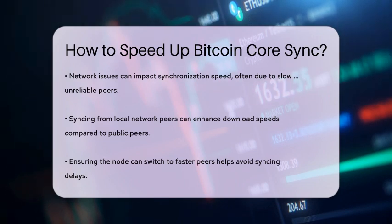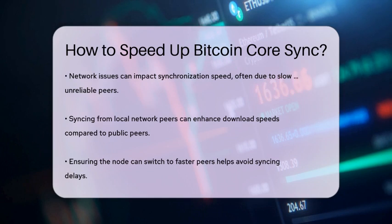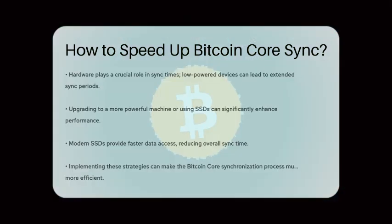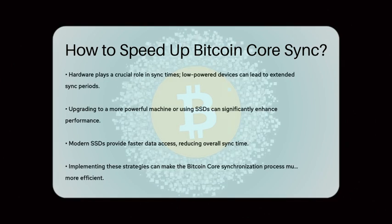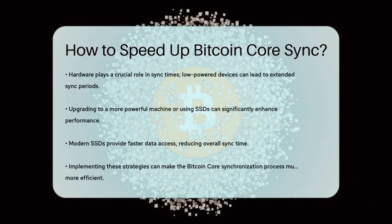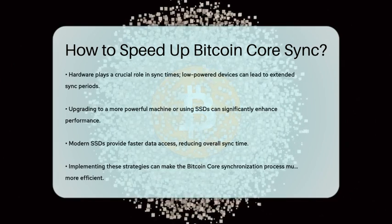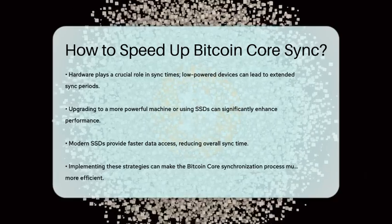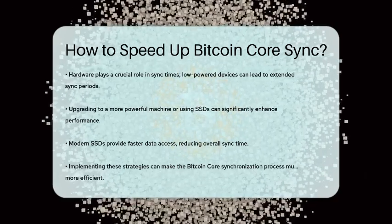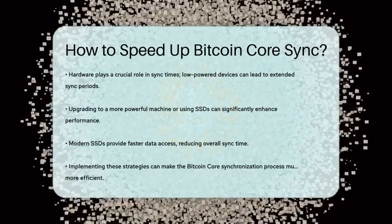Additionally, ensuring your node can switch to faster peers when it encounters slow ones can help avoid bottlenecks. Lastly, consider the hardware you're using. If you're running Bitcoin Core on a low-powered device like a Raspberry Pi, it can take weeks to sync. Upgrading to a more powerful machine or using a faster storage solution, like an SSD, can greatly improve sync times. Modern SSDs in particular can provide a substantial speed boost because they reduce the time spent on disk operations.